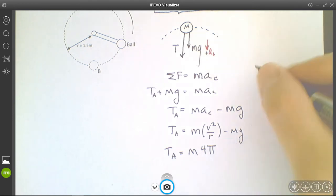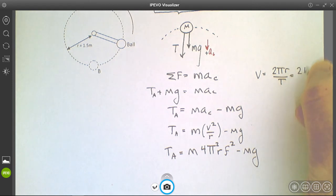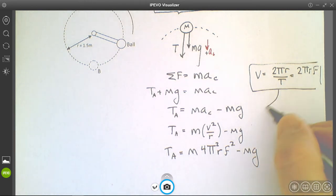Again, it's going to be 4π²rf² minus mg. That came about because the tangential speed is 2πr over T, which is 2πrf, and we use that relationship here.